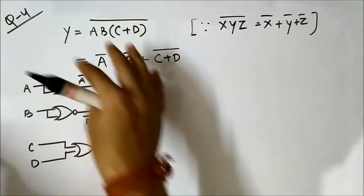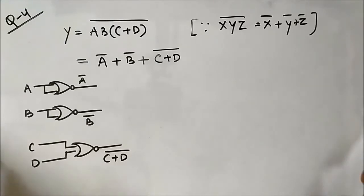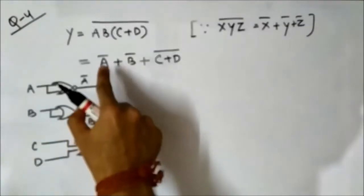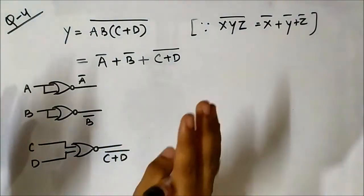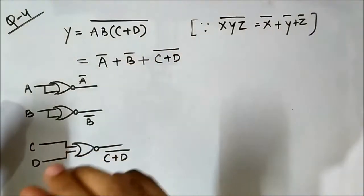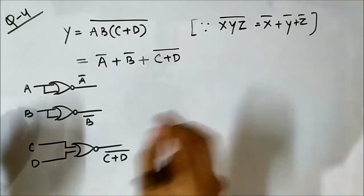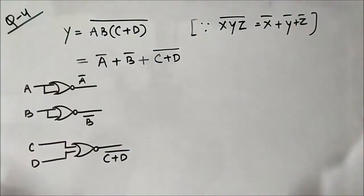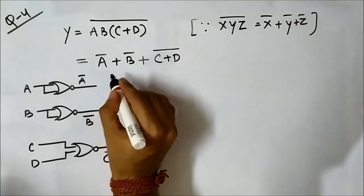Here is the important part: it has not been mentioned in this question that we can use a three-input NOR gate. So we cannot directly apply these three signals to a three-input NOR gate. If it had been mentioned that we are allowed to use three-input NOR gates, we would have directly fed them in and complemented the output. But since that is not mentioned, we have to use two-input NOR gates.